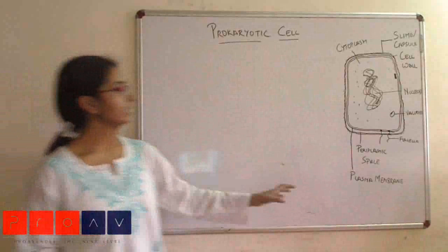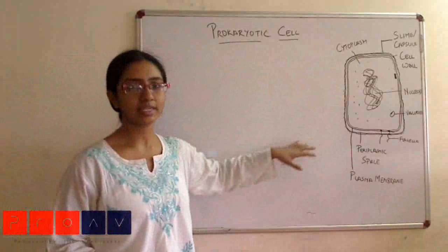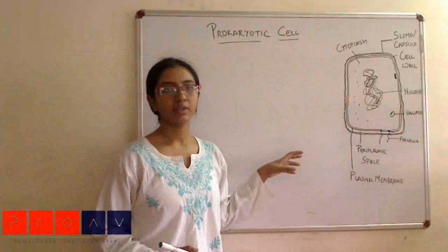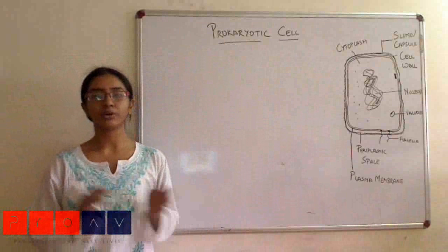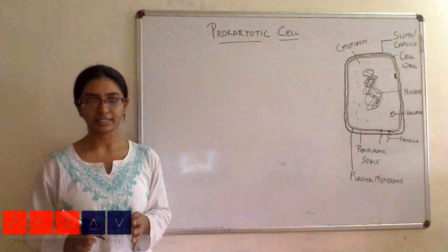As you can see on the right side, the cell structure is drawn. Before we move on to the cell, we need to understand that for any basic cell, whether prokaryotic or eukaryotic, we need to have three basic things.